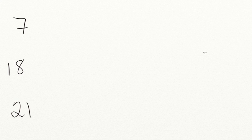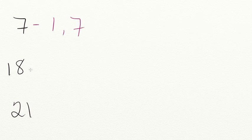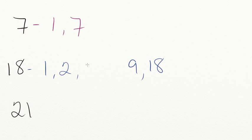Let's try another practice problem. Can you find the greatest common factor of 7, 18, and 21? Well, 7 is a prime number, so it only has factors of 1 and 7. For the number 18: we can multiply 1 times 18, 2 times 9, and 3 times 6.